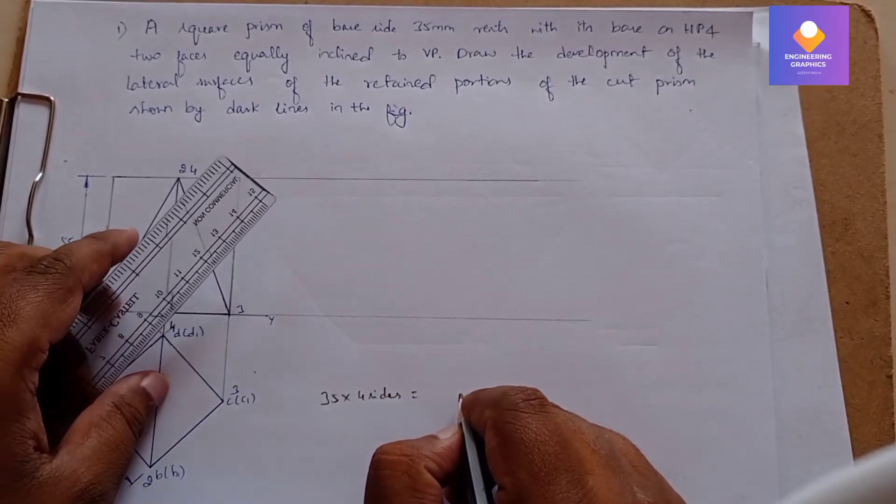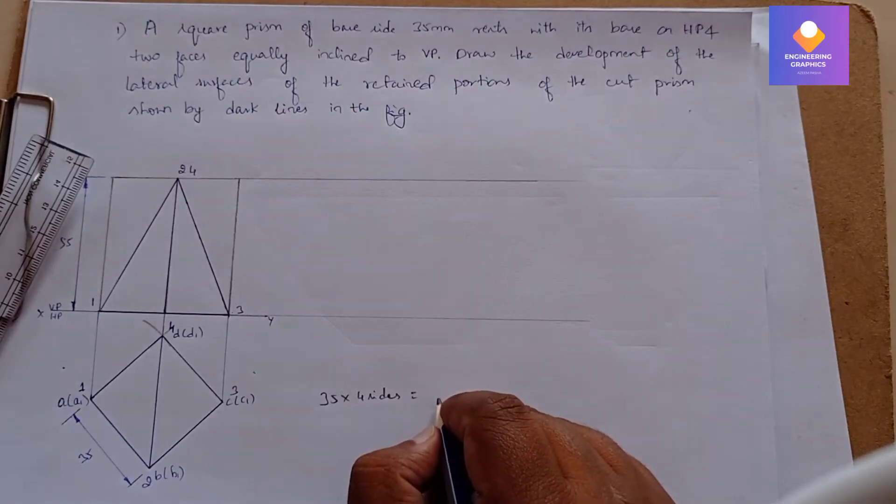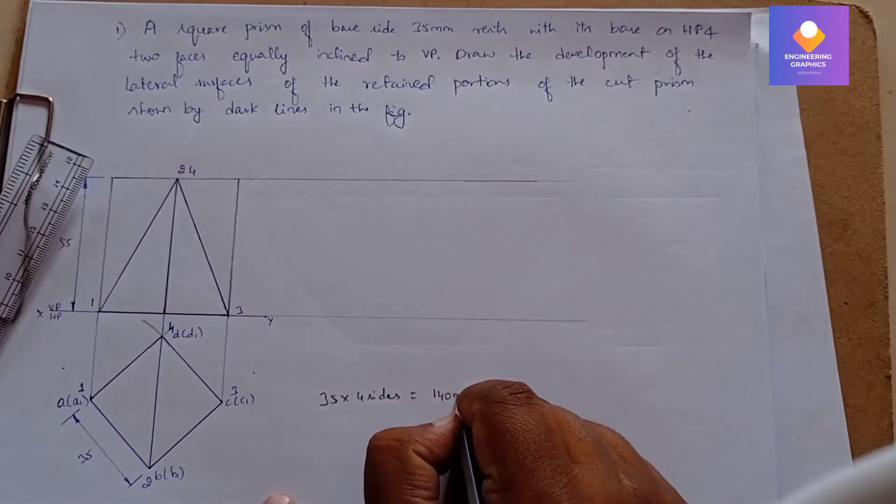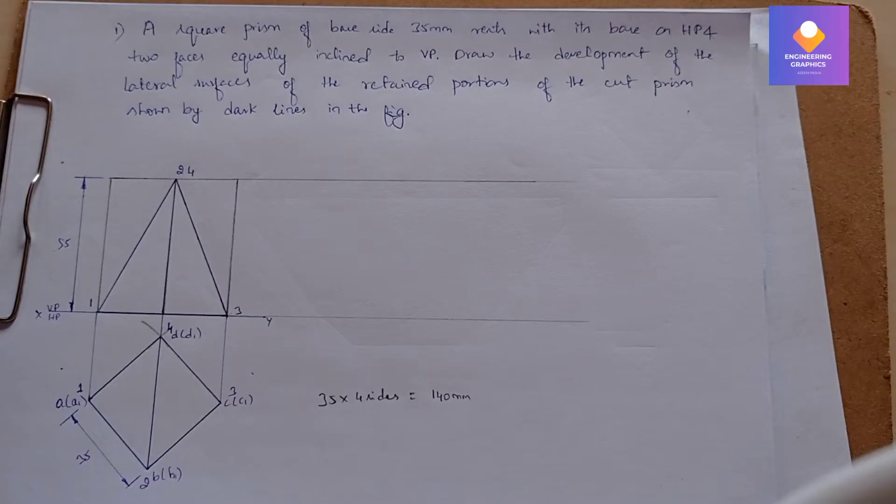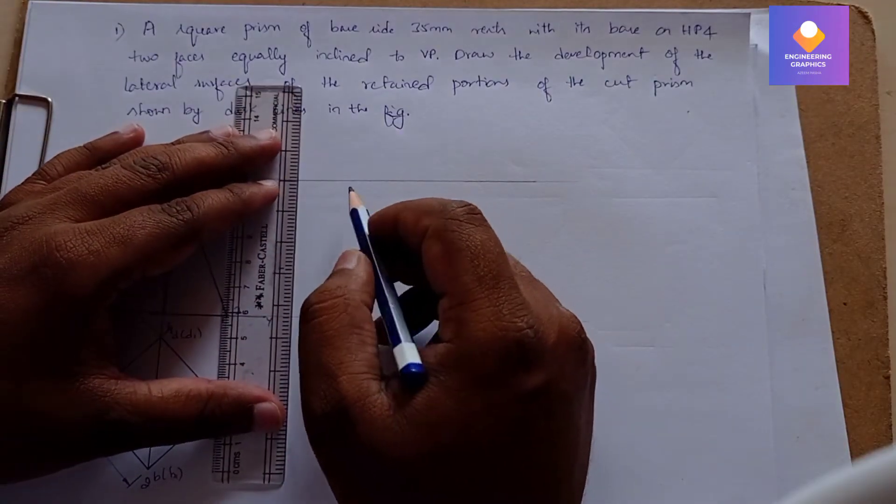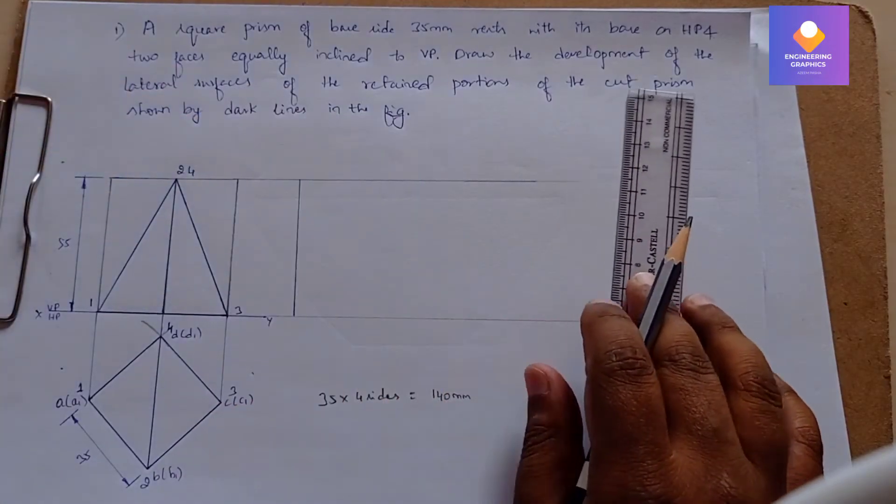It's a square prism, so four sides means the total length is 140mm. First, we will take the initial edge here as the initial reference point.